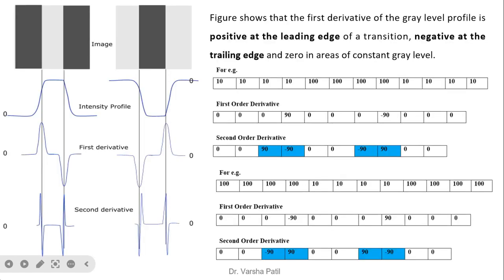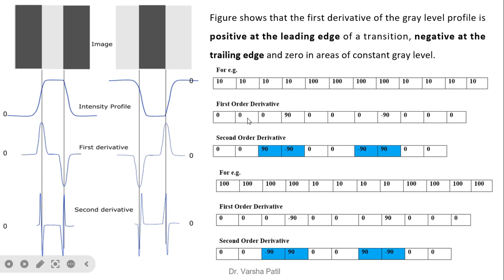For the constant regions we get derivative 0. At the transition from dark to bright, the derivative peaks at plus 90. After the peak, the constant brighter region gives 0 again. Then from bright to dark, we get minus 90. So the first order derivative sequence is: 0, 0, 0, plus 90, 0, minus 90, 0. The magnitude of the first derivative can be used to detect an edge.